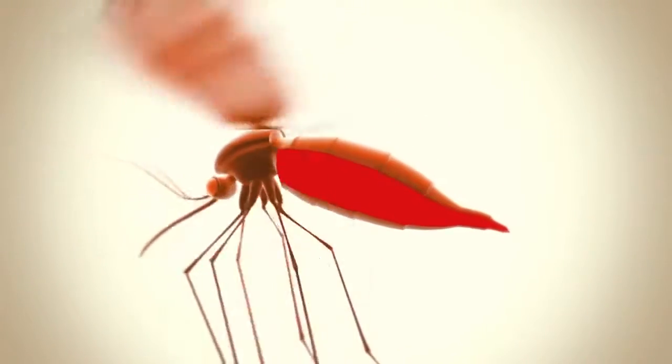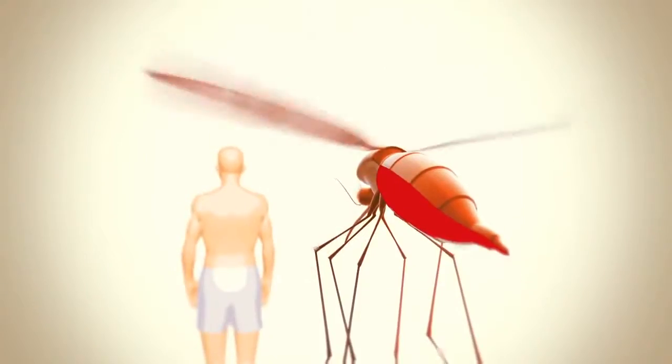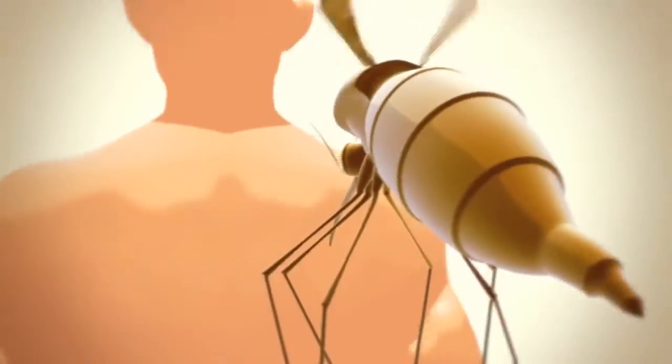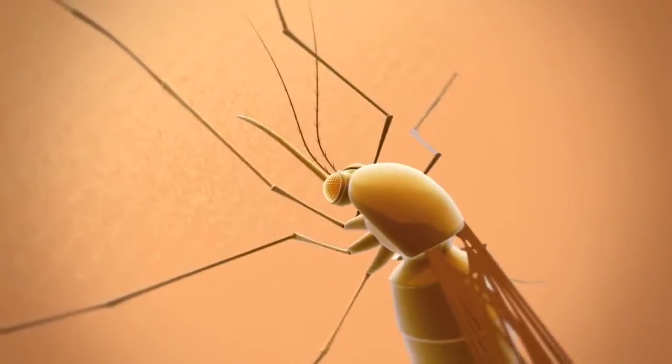Inside the mosquito, the gametocytes develop into new sporozoites. So now the human has infected the mosquito, the life cycle comes full circle and continues.